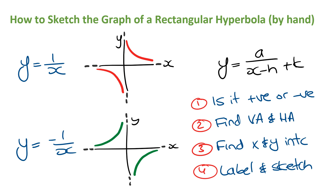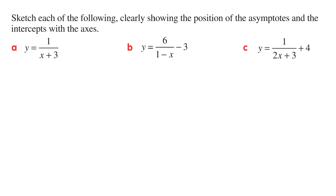Now that we know the basics, let's get into some examples. We've got: sketch each of the following, clearly showing the position of the asymptotes and the intercepts with the axes. Part A: y is equal to 1 on x plus 3.